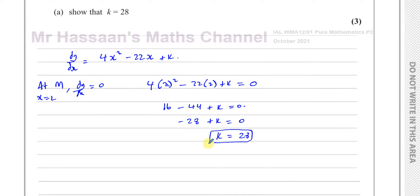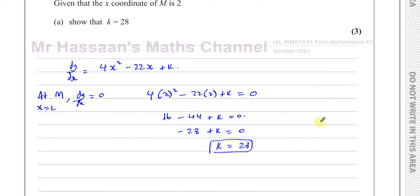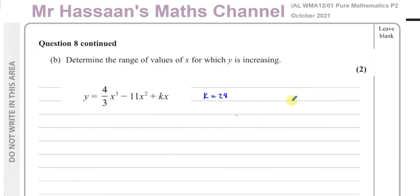We've shown k = 28 — that's the answer to part A. Now moving on to part B: determine the range of values of x for which y is increasing. We need to find when the gradient is positive.